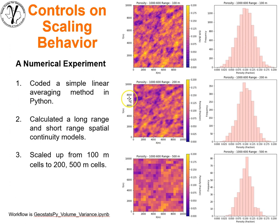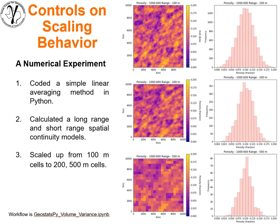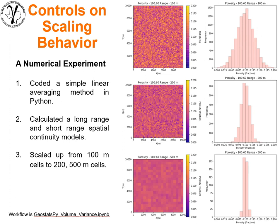Looking at the distributions: the original distribution goes between about zero and 20% fractional porosity. As we scale up, we're quickly reducing the variance of the model. Taking the short-scale continuity model — which has the same original distribution — and comparing as we go up to 200 meter by 200 meter cells and then 500 meter by 500 meter cells, the distribution variance reduces so, so quickly compared to the long-range continuity model.